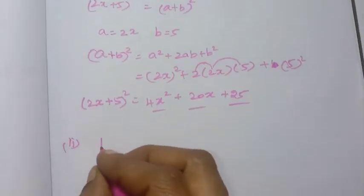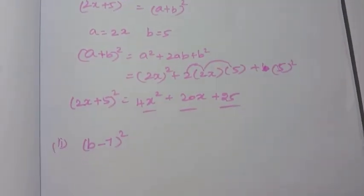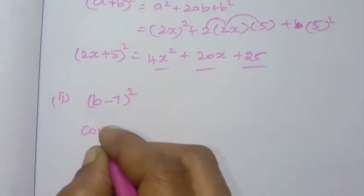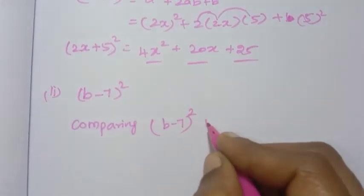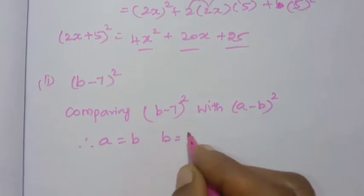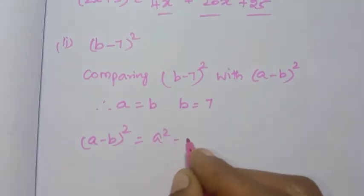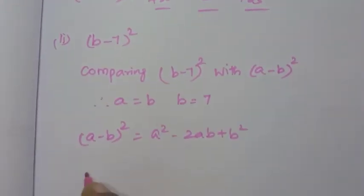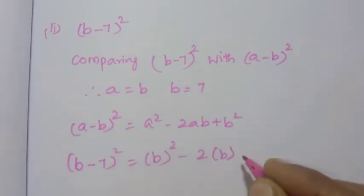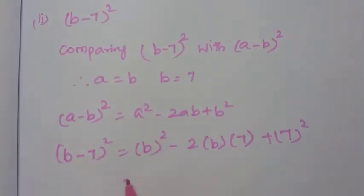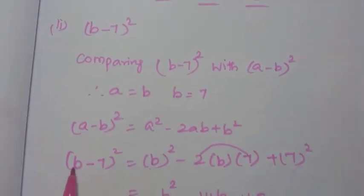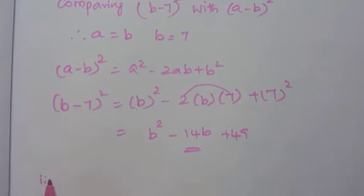Second sum: b minus 7, the whole square. We compare this with a minus b, the whole square. Here a equals b and b equals 7. Formula: (a − b)² = a² − 2ab + b². Substituting: b squared minus 2 times b times 7 plus 7 squared equals b² − 14b + 49.